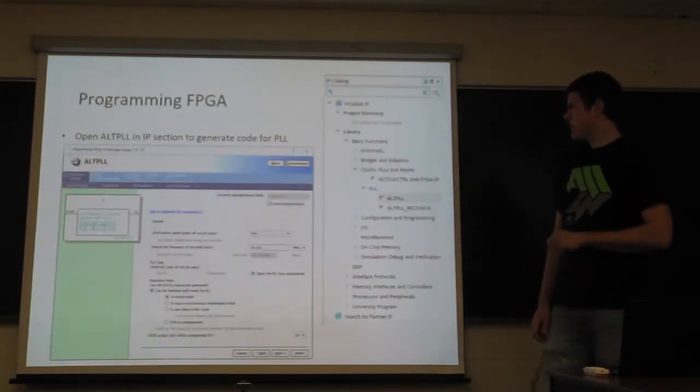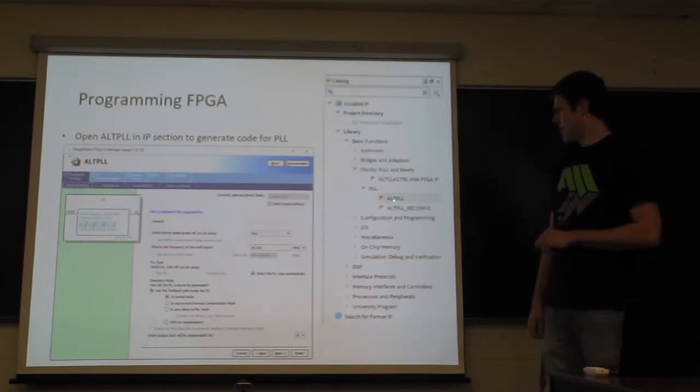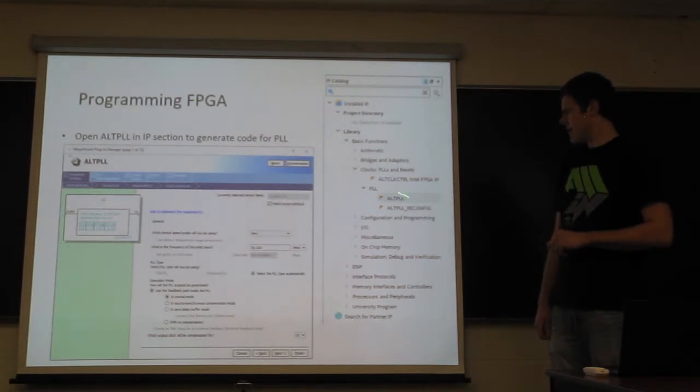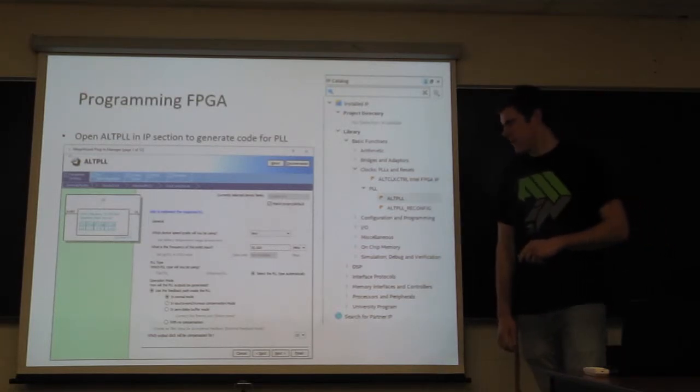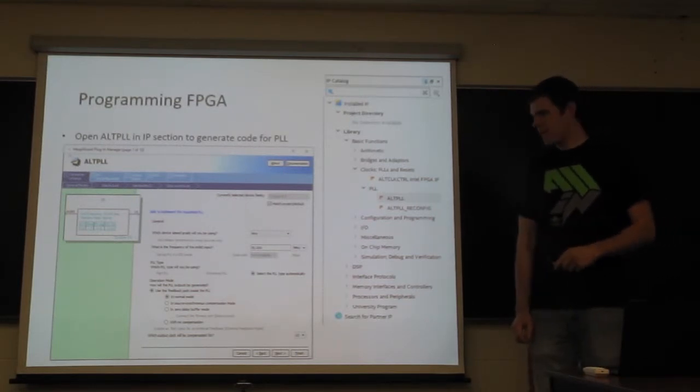At this point, you're going to create your phase locked loop. You're going to go to the intellectual property catalog and open up the GUI for a phase locked loop. This allows you, the first screen allows you to set up what is your input clock.